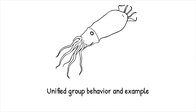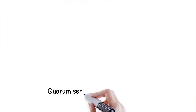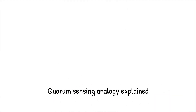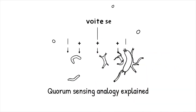The marine bacterium Vibrio fischeri uses quorum sensing to produce bioluminescence when its population reaches a critical density inside the light organ of certain squid species. Quorum sensing is like a voting system where bacteria vote by releasing signals. When enough votes are cast, the group takes collective action to perform tasks that benefit the community.